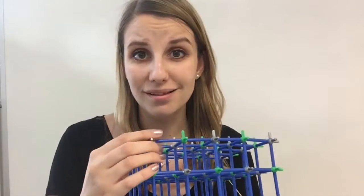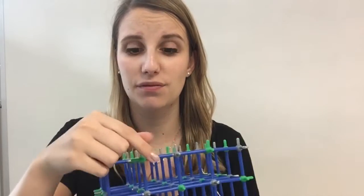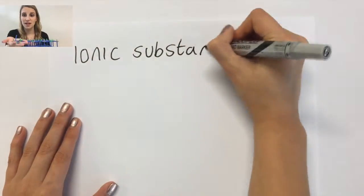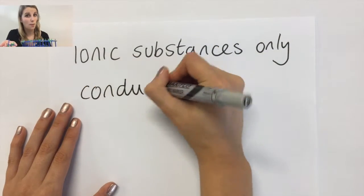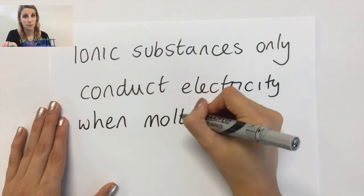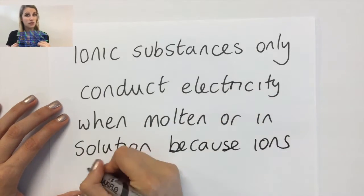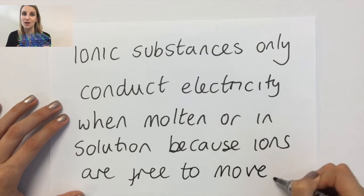If we melt the ionic compound or put it in solution by dissolving it in water, we can start to break apart this structure, and as it breaks apart, what you end up with is ions that are completely free to move. So ionic compounds can conduct electricity, but only when they're molten or in solution. If you keep them as a solid, it has ions but they can't move, so it can't conduct electricity.